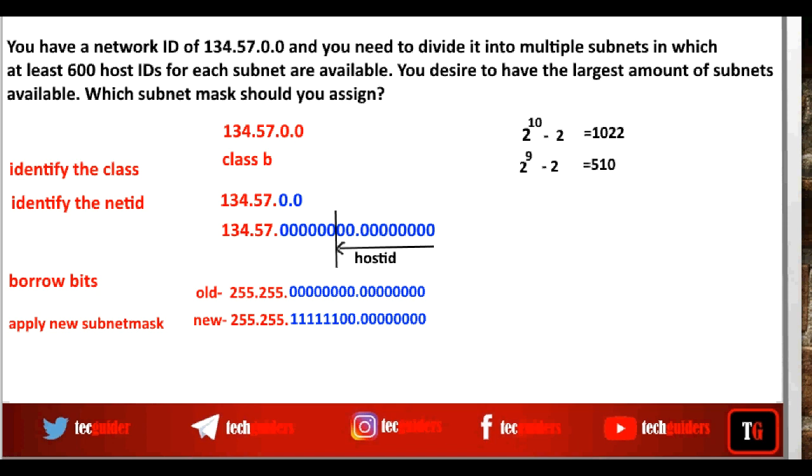Which is 255.255.252.0. So by applying this subnet mask to this network, we can divide this network into 2 power 6 subnets or 64 subnets, where each subnet can support to a maximum of 1022 hosts.